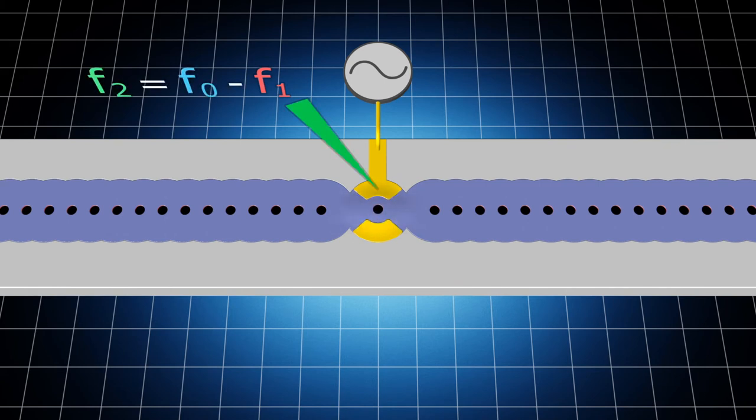Furthermore, if we make the resonator vibrate at the frequency of f2, which is equal to the difference between frequency f0 and f1, we found that energy will be transferred from the phonon to the resonator. This phenomenon can be used to temporarily store a phonon in the resonator.